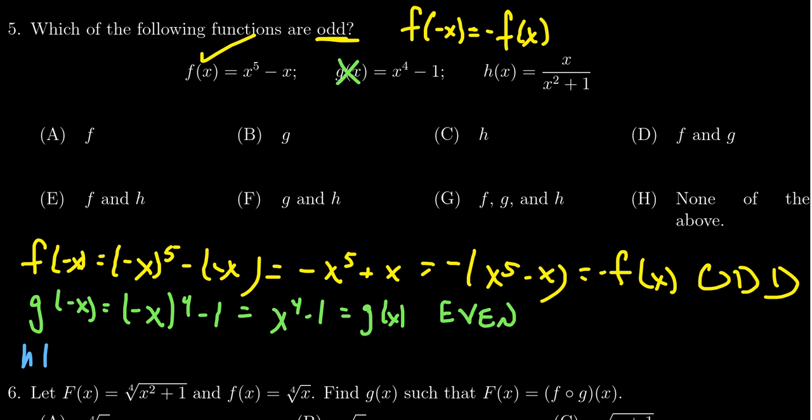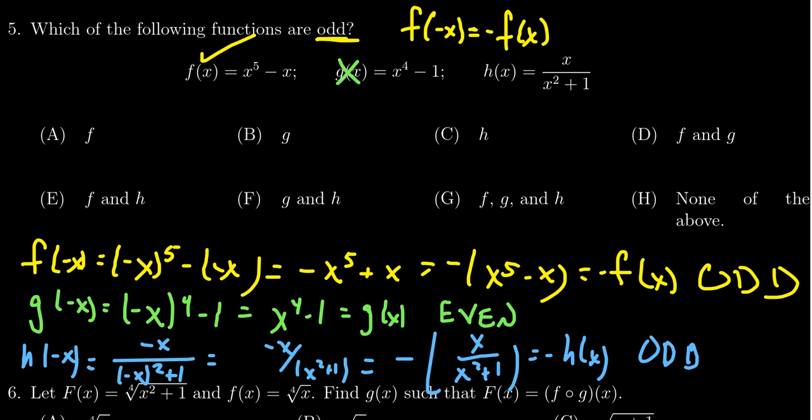The final one is h of x. We're going to look at h of negative x. This will give us negative x over negative x squared plus one. On the top you just leave it as negative x; on the bottom you have negative x squared, which will become a positive x squared. Notice you can factor the negative sign out in front of everything, so you get x over x squared plus one. This looks like negative h of x, which indicates our function is in fact odd.